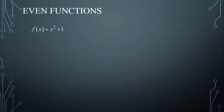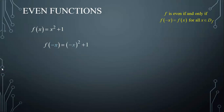For example, consider f(x) equals x squared plus 1. To check whether this function is even algebraically, we need to check if f(-x) equals f(x). To find f(-x), I replace in f(x) all x's by negative x. Negative x all squared is x squared, which brings me back to f(x). Consequently, I deduce that f is an even function.